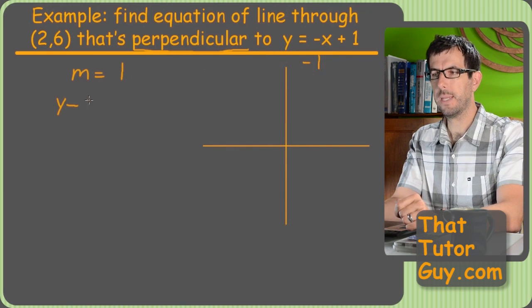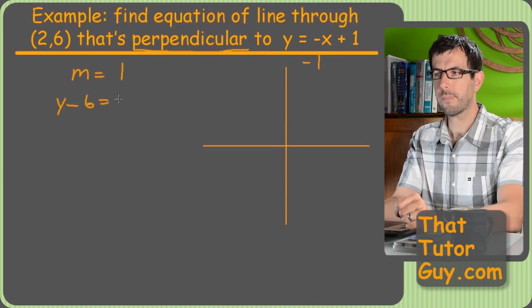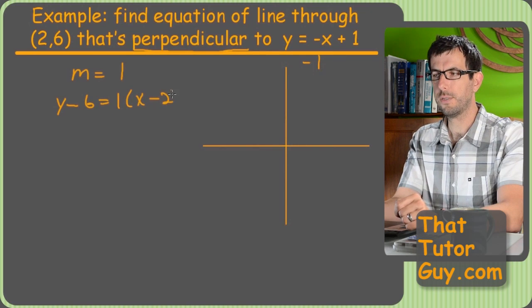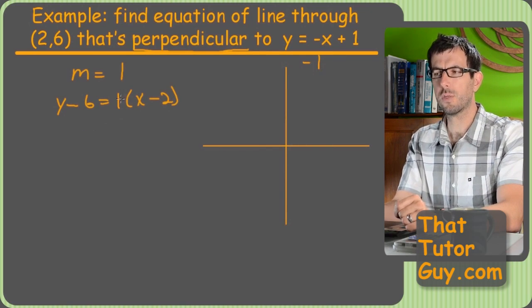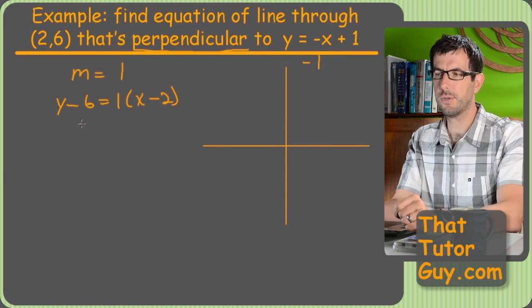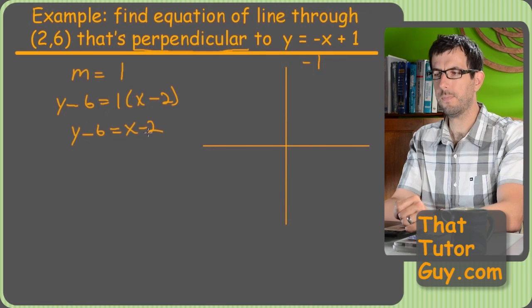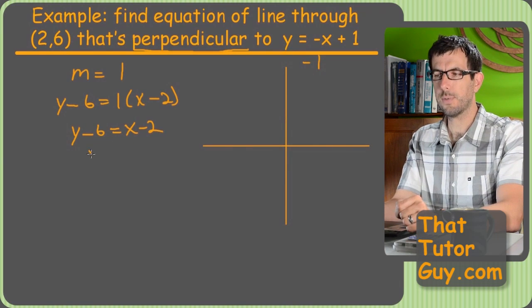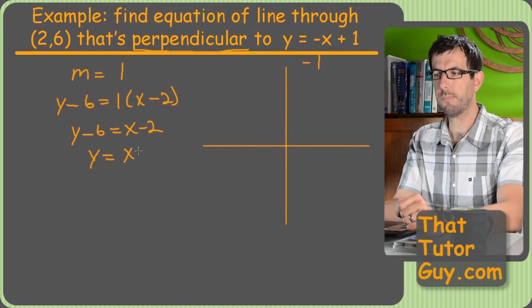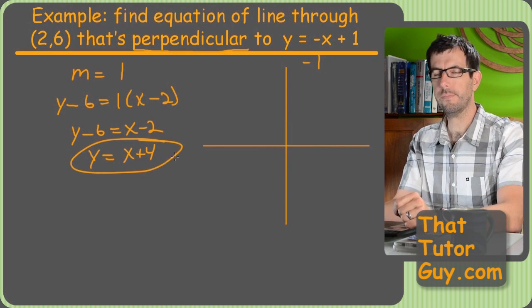So, y minus six equals one times x minus two in point slope form. Of course, one times all this stuff. I would just distribute that out. Y minus six equals x minus two. Add six to both sides. We get y equals x plus four. Pretty fun.